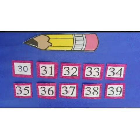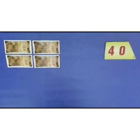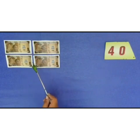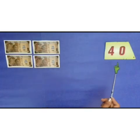Okay, students, now we will learn the next numbers 40 to 49. We have 10, 20, 30, 40. Four groups of 10 is equal to 40.